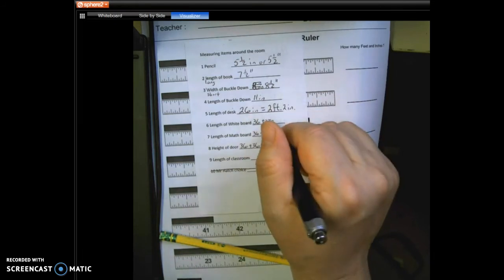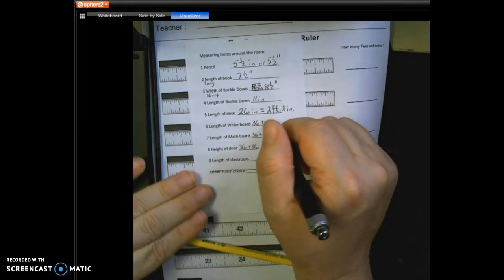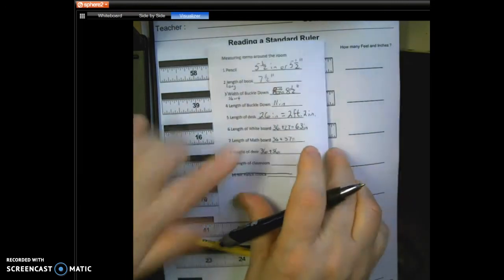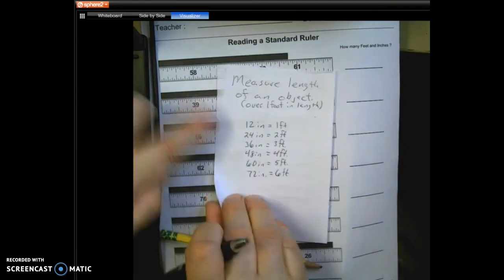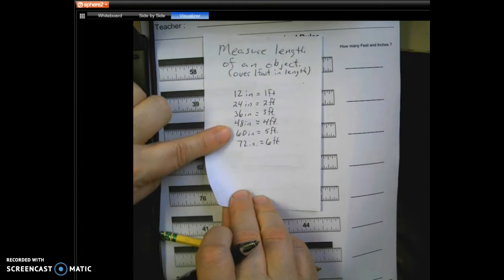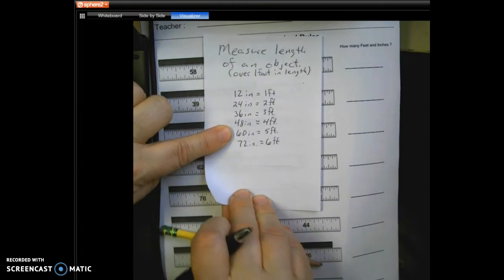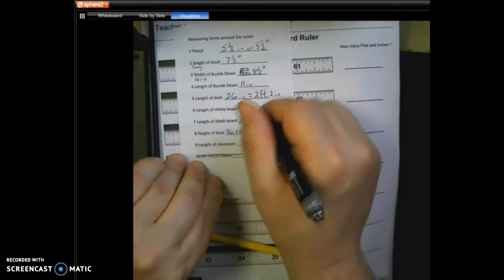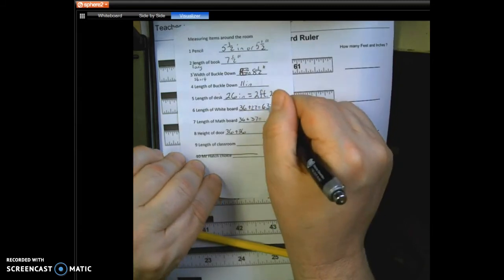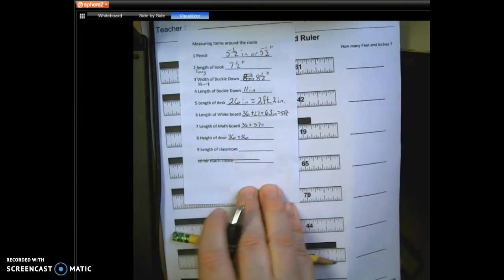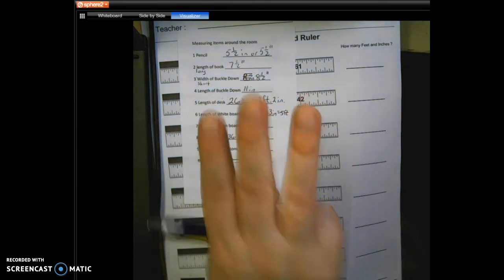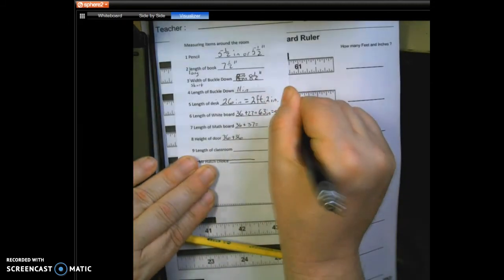The length of the whiteboard, when we go 36 plus 27, is 63 inches. So I'm going to look for the 63 on the other side. We know that it's over one foot, two feet, three feet, four feet. It's really close to five feet at 60 inches, so we're going to call that five feet. And the 60 inches to get to 63 goes 60, 61, 62, 63 inches. So it's five feet, three inches for that whiteboard.